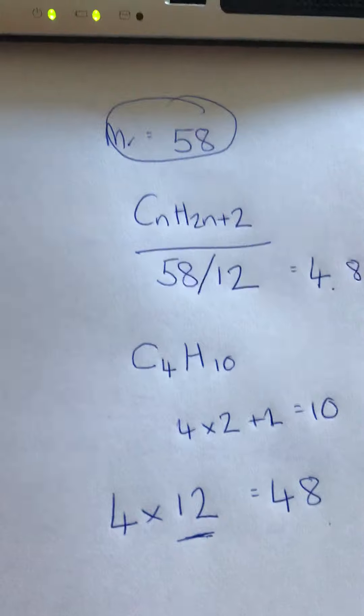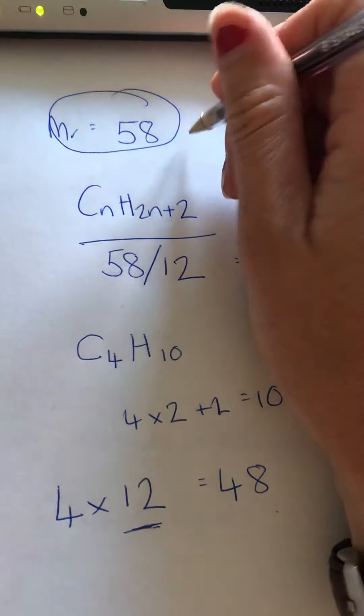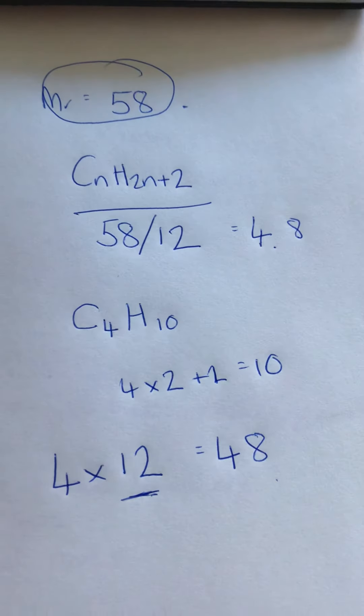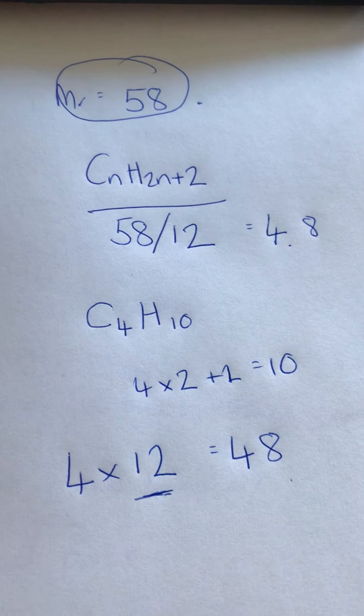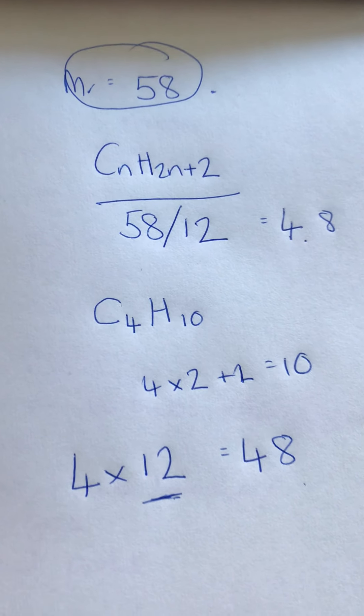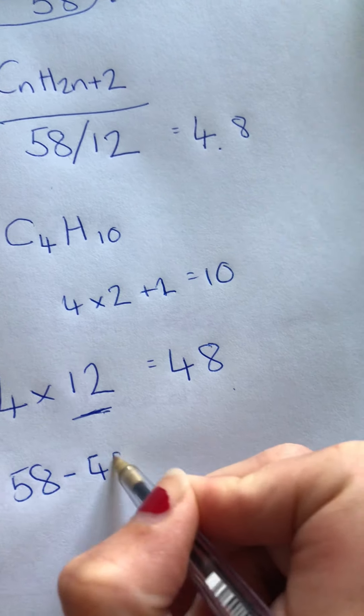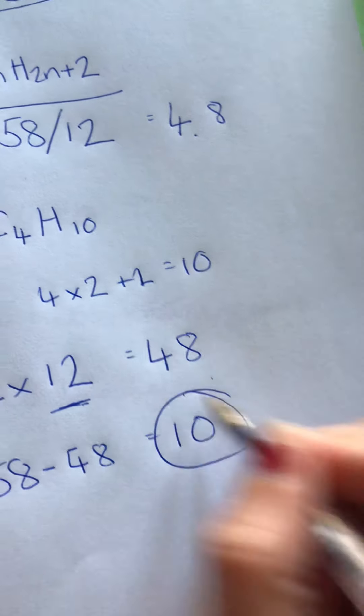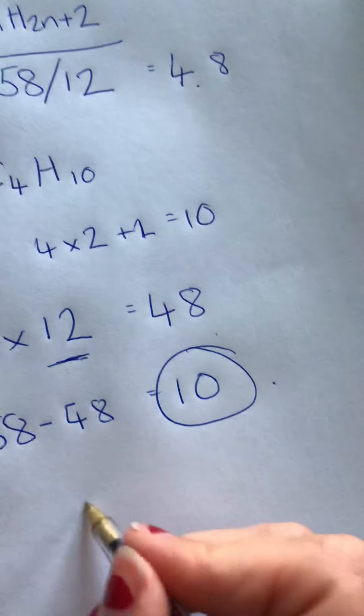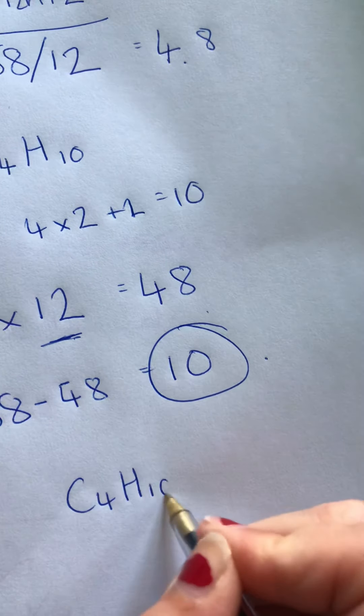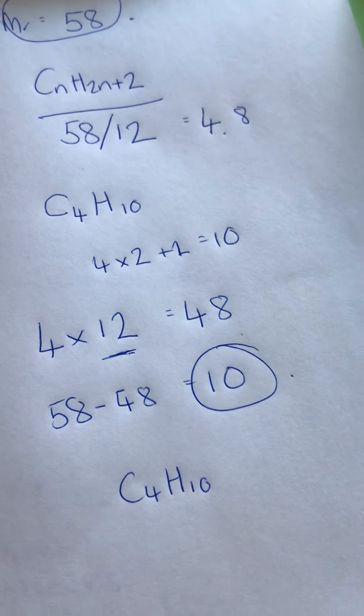Which means 10 of that value must come from hydrogen. Hydrogen has a mass of 1, therefore there must be 10 of them. So you can then say 58 minus 48 equals 10, and that tells you how many hydrogens you're going to have, i.e., C4H10. Okay, hope that helps.